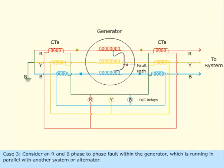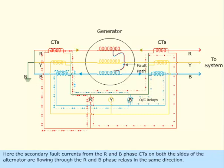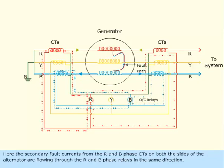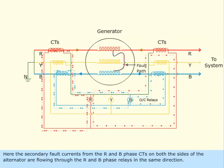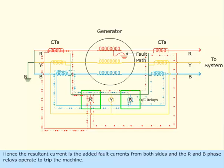Case 3: Consider an R and B phase-to-phase fault within the generator, which is running in parallel with another system. Here, the secondary fault currents from the R and B phase CTs on both sides of the alternator are flowing through the R and B phase relays in the same direction. Hence, the resultant current is the added fault currents from both sides and the R and B phase relays operate to trip the machine.